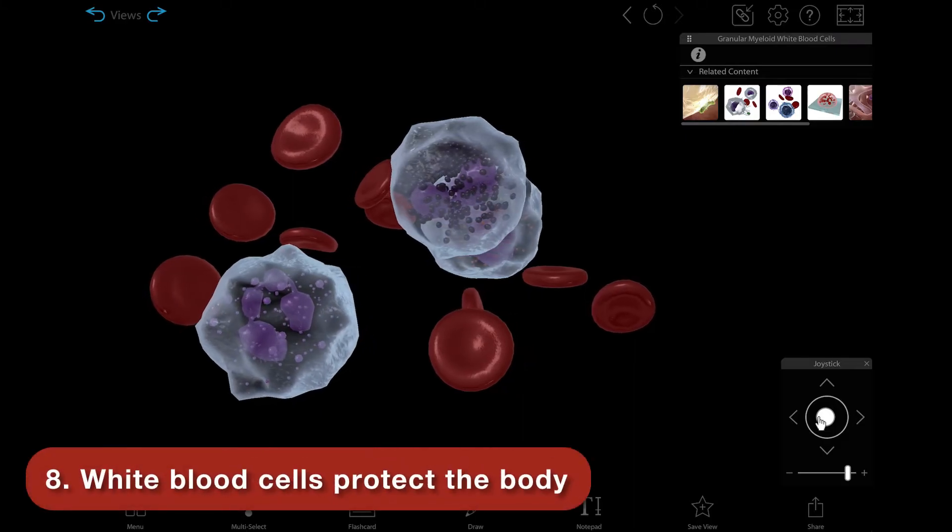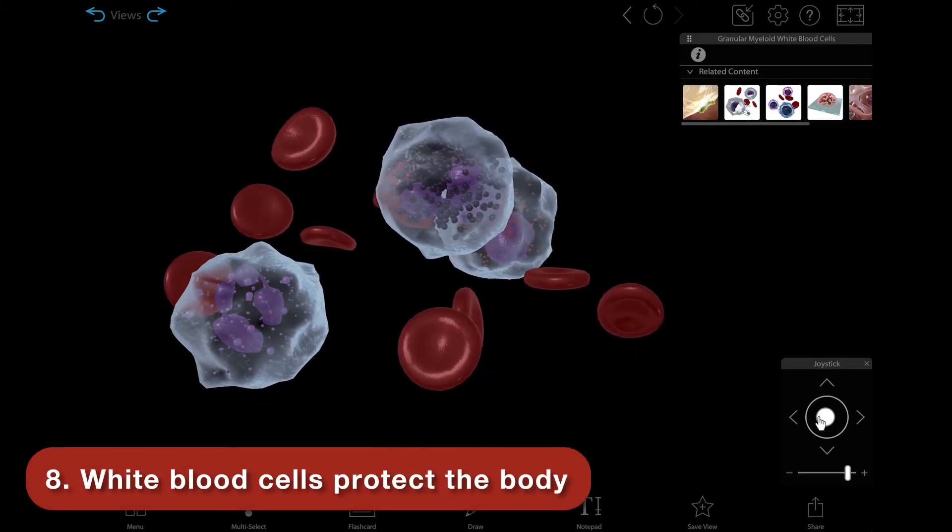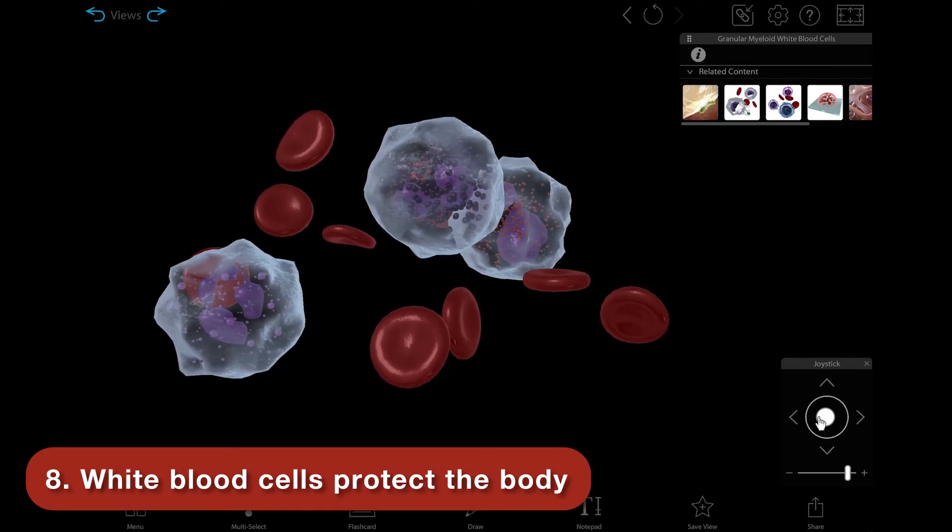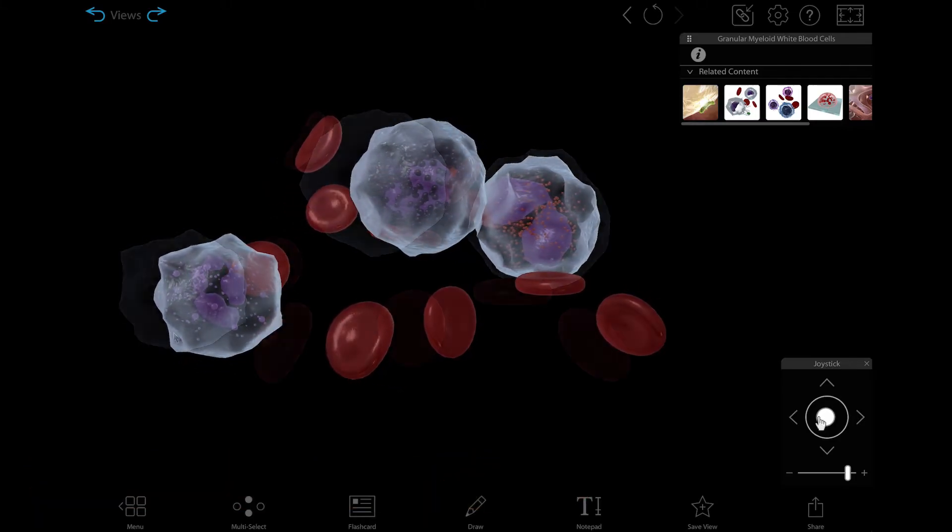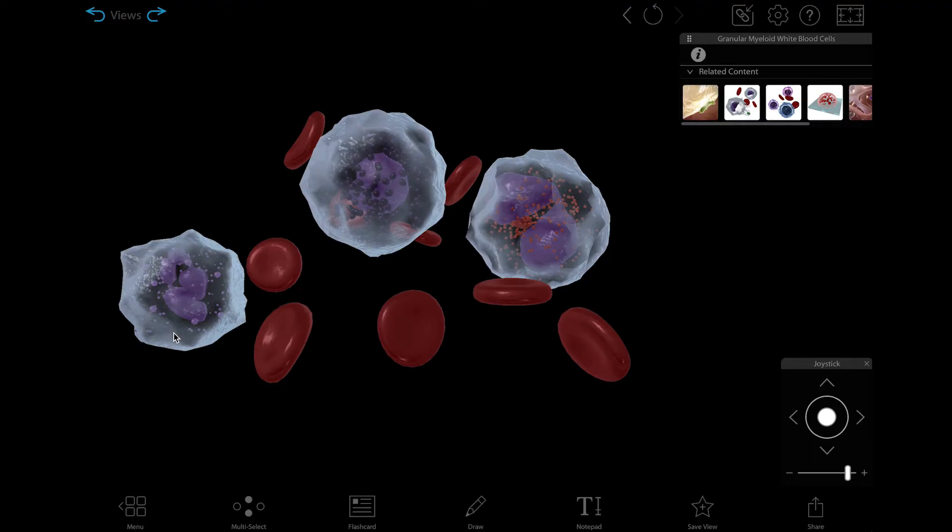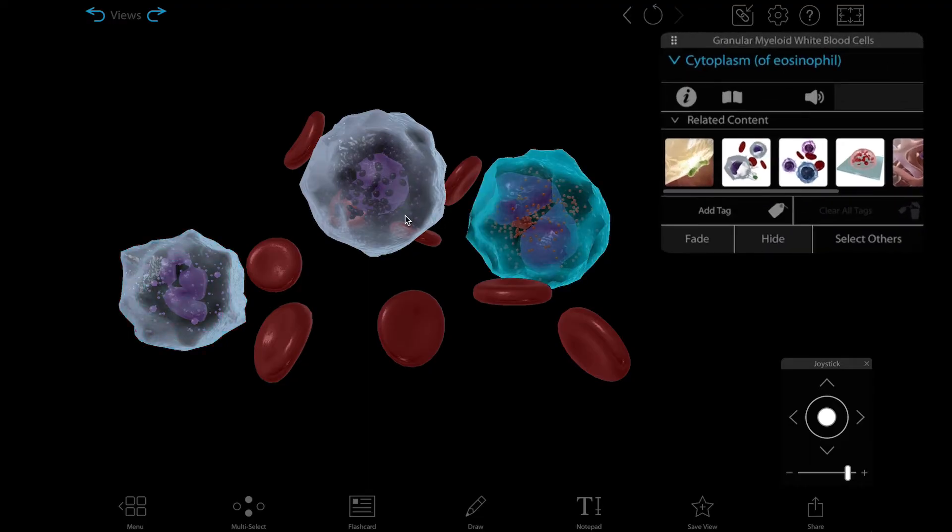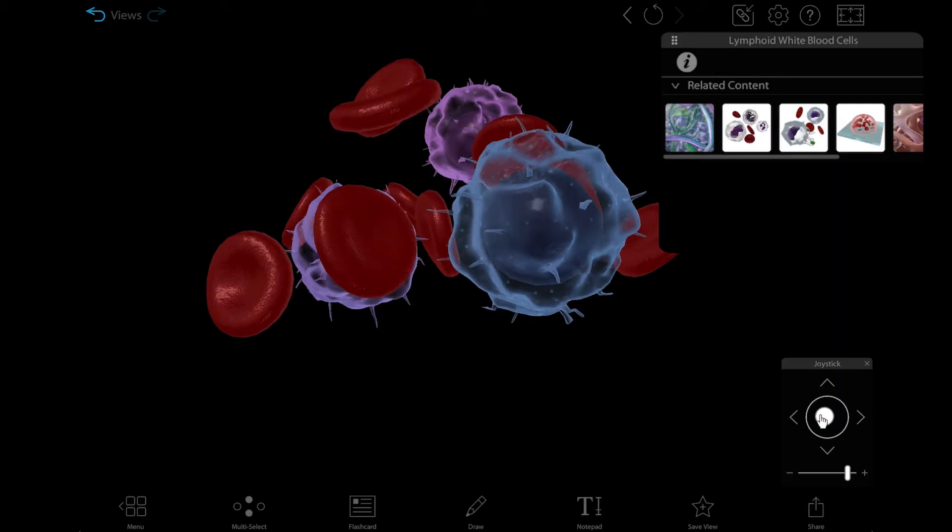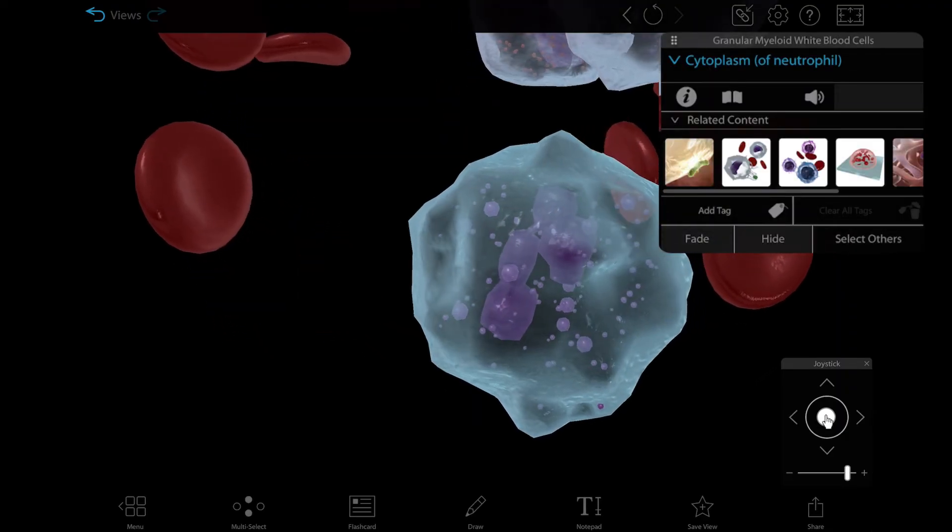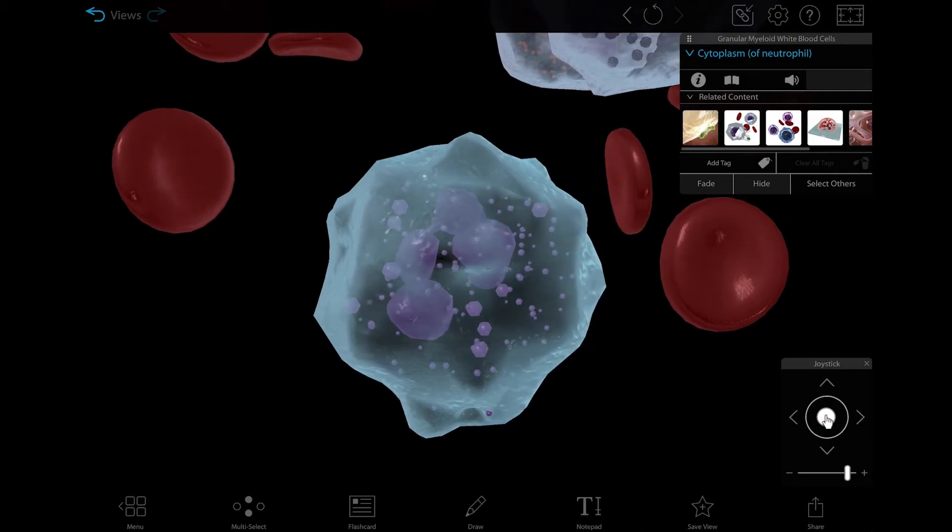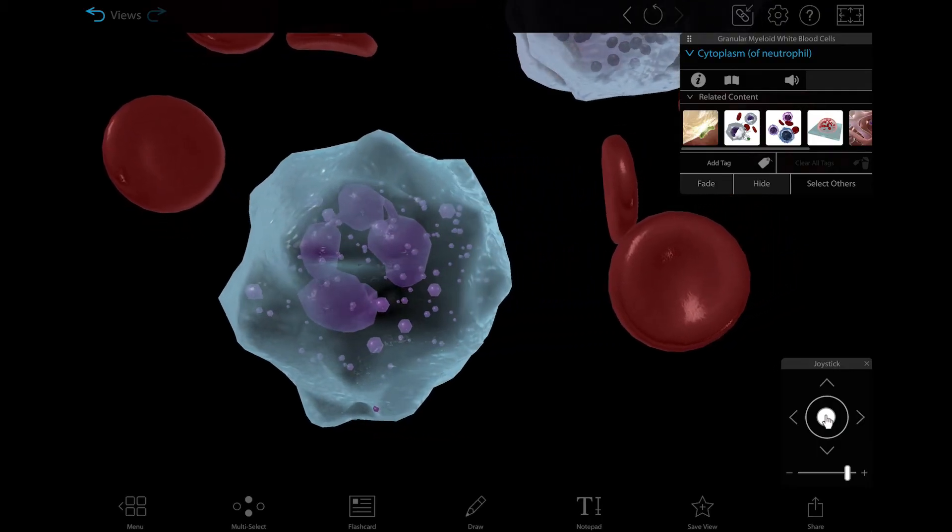White blood cells are the disease-fighting components of blood. They account for just 1% of circulating blood but multiply during infection or inflammation. There are five types of white blood cells: neutrophils, eosinophils, basophils, lymphocytes, and monocytes. Neutrophils are the most abundant, comprising 60% to 70% of all white blood cells.